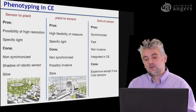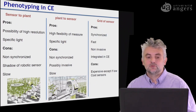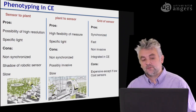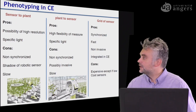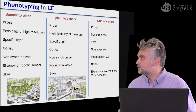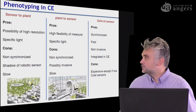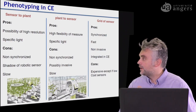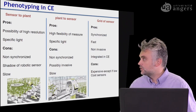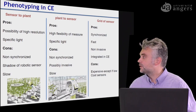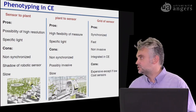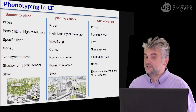Here is a global view of the different approaches that you can select if you want to do phenotyping in controlled environment. The first approach on the left corresponds to the use of sensors that you will bring individually to each plant. The second one corresponds to conveying the plant and bringing it under a unique sensor. And the last approach corresponds to having a grid of sensors — a cohort of sensors. Let's go through all the pros and cons of each of these strategies and explain the one that we selected in this course.